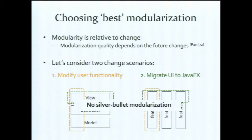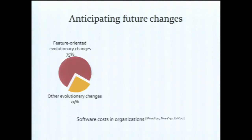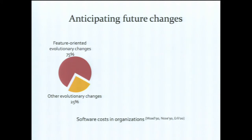So there is no silver bullet modularization — you always have to look at the changes that will happen in the future. How do we look into the future? Experienced programmers or domain experts may anticipate some things, and you can reuse knowledge from similar projects. There are also papers reporting on software costs in organizations. What is commonly reported is that during the evolution period, it's users that drive the changes — around 75% of changes during evolution and maintenance is connected with enhancing, adding, or fixing functional features for users. The remaining 25% is other kinds of changes.